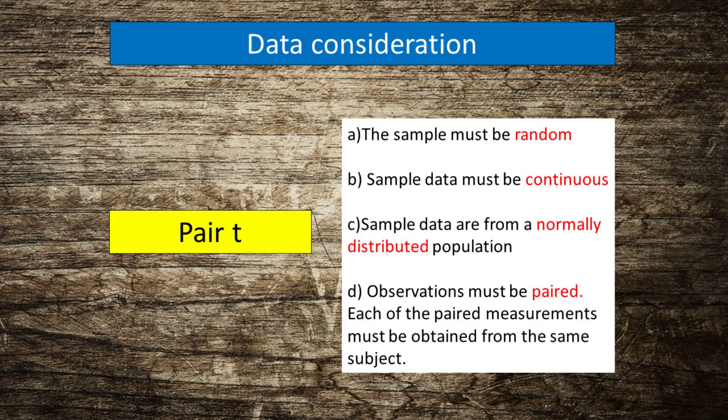To ensure that your results are valid, consider the following guidelines when you collect data, perform the analysis, and interpret your results. For a paired t-test, the sample must be random, continuous, and sample data are from normally distributed population. Besides, observations must be paired. Each of the paired measurements must be obtained from the same subject.